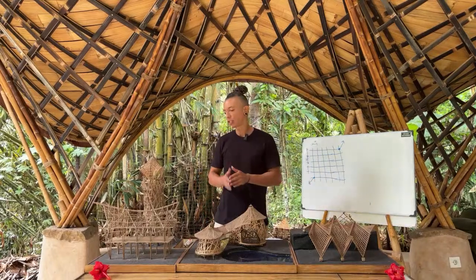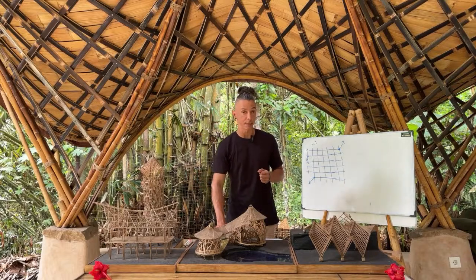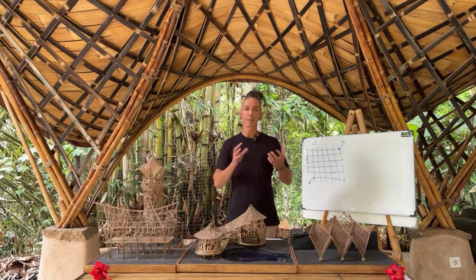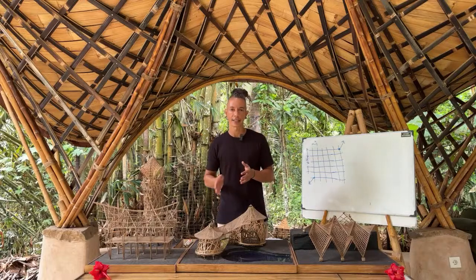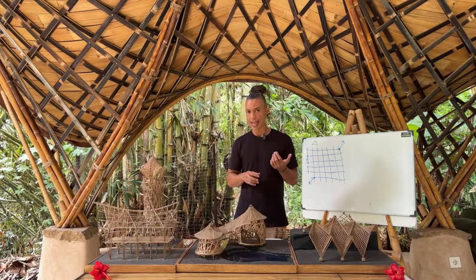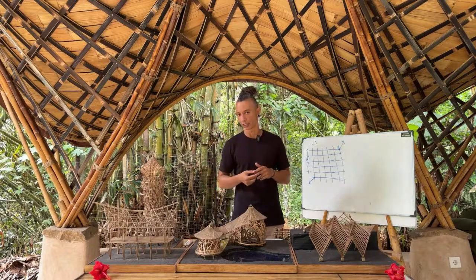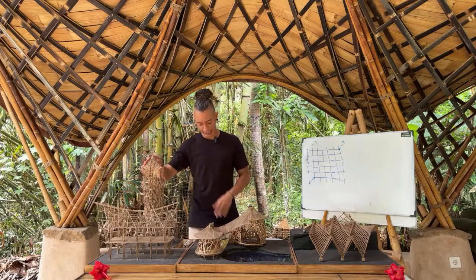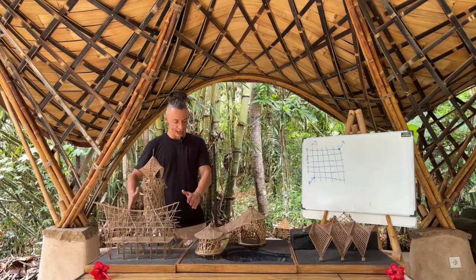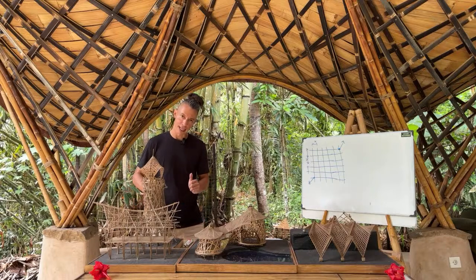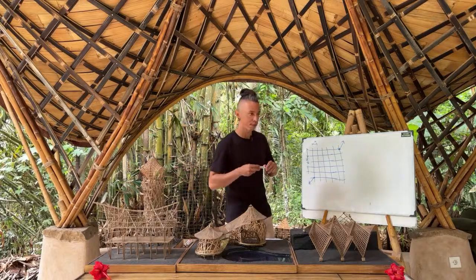Next I want to talk about another structural system: the reciprocal tower. A reciprocal tower works in a very similar way to the hyperbolic paraboloid — they actually come from the same family of typologies. This tower you can see here has a very nice hourglass shape, and the way a tower is built is very simple.